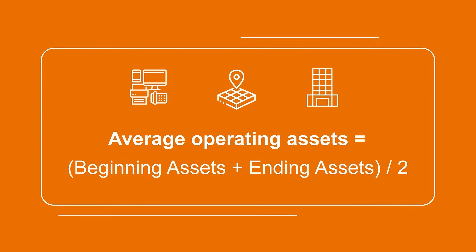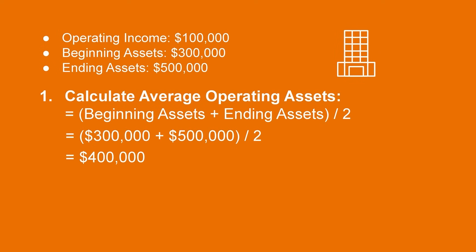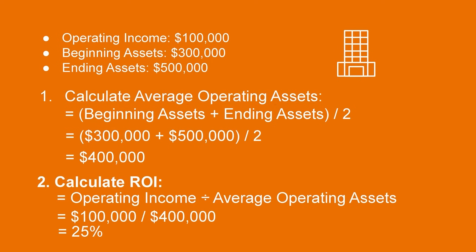This gives us an understanding of the average value of their assets over the span of that accounting period. For example, say a company had $100,000 of operating income in one year. Their operating assets were worth $300,000 at the start of the year and $500,000 at the end of the year. To calculate return on investment, first we calculate their average operating assets: beginning assets plus ending assets divided by 2, or $300,000 plus $500,000 divided by 2, which equals $400,000. Now we take the $100,000 of operating income and divide it by the $400,000 of average operating assets, for a return on investment of 25%. This means that for each dollar invested, the company earned $0.25 in profit.